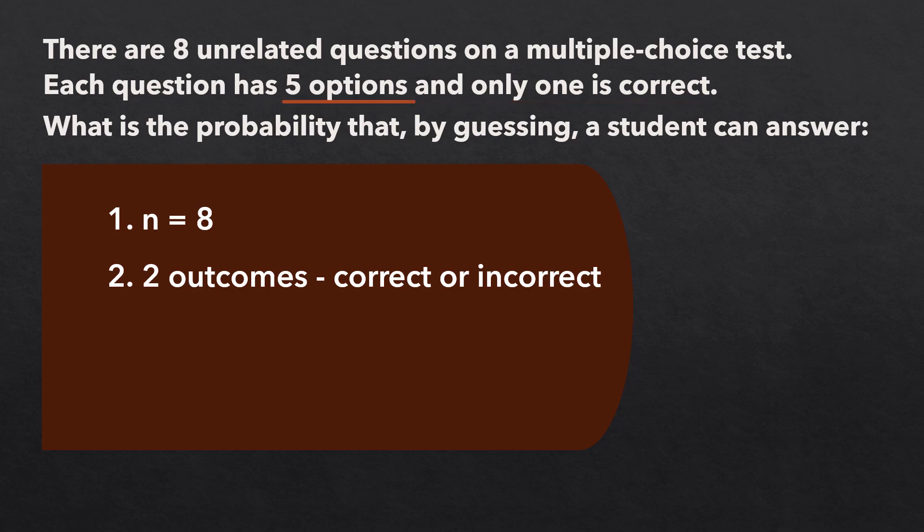The probability of success is fixed. Since there are 5 options in each question, the probability of success will always be 1 over 5 or 0.2, since the student is guessing. The probability of failure will be 1 minus 0.2 or 0.8. And the trials are independent since the questions are unrelated.